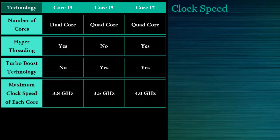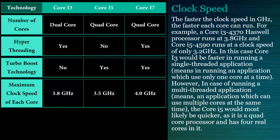Now let's discuss clock speed — what clock speed exactly means in a processor. In simple language, the faster the clock speed in GHz, the faster each core can run. For example, a Core i3-4370 Haswell processor runs at 3.8 GHz and a Core i5-4590 runs at a clock speed of only 3.2 GHz. In this case, the Core i3 would be faster in running a single-threaded application, meaning an application which uses only one core at a time.